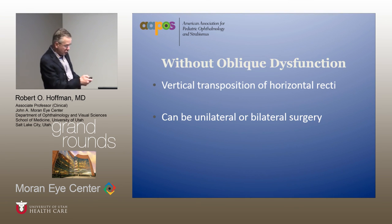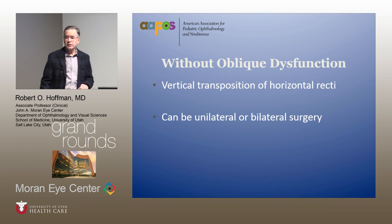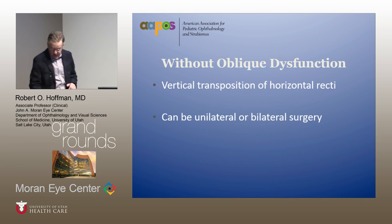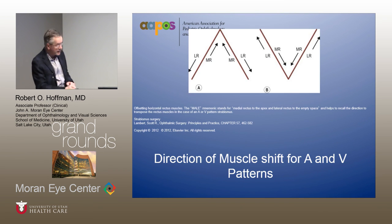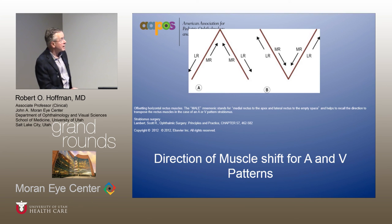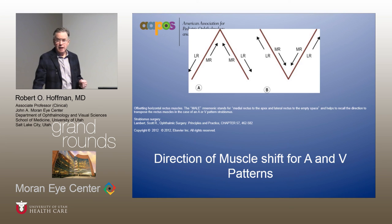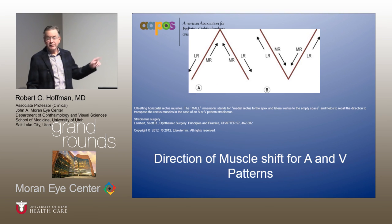If there's no oblique dysfunction, do vertical transposition of the horizontal recti — either unilateral or bilateral surgery. For a V-pattern, shift the medial rectus down and the lateral rectus up. In this diagram: for an A-pattern and a V-pattern, the lateral rectus is shifted towards the open end of the pattern, the medial rectus towards the closed end. Residents: this will almost certainly appear on OCAPs in some form.